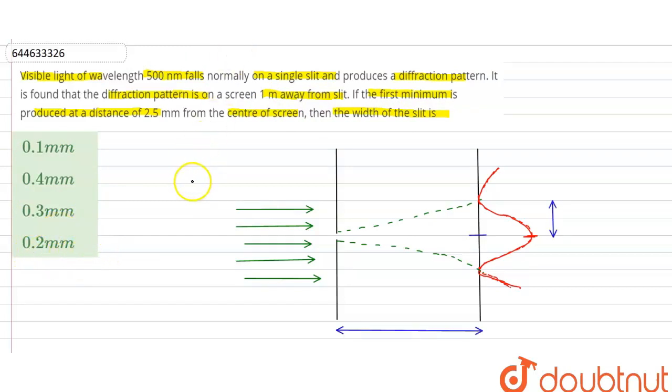In this question, light of wavelength λ = 500 nanometers falls on the slit and is diffracted. The first minima occurs at a distance y that is given in the question, which is 2.5 mm.